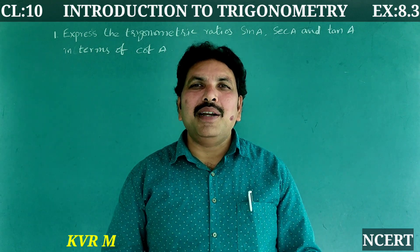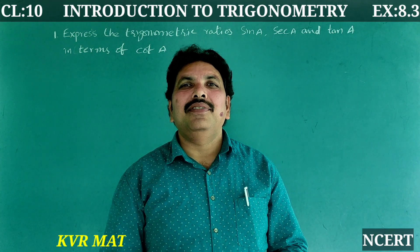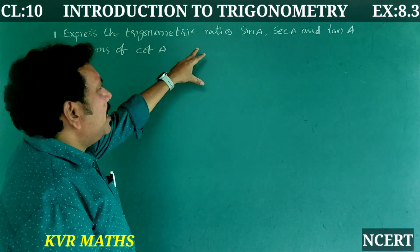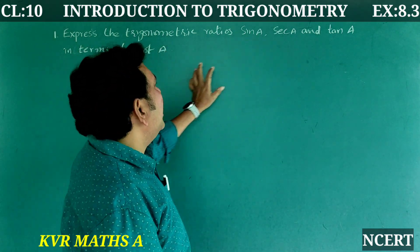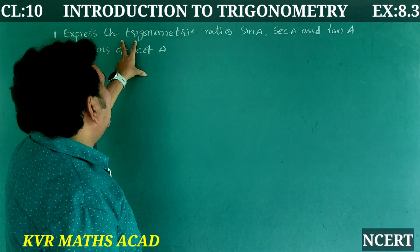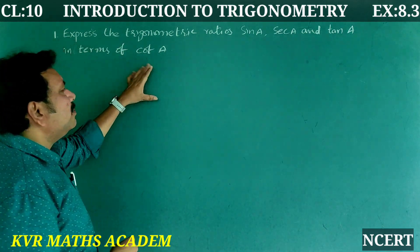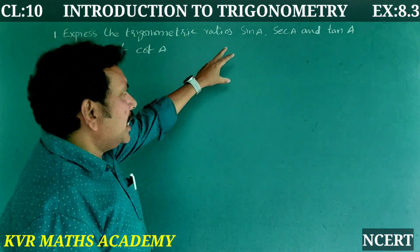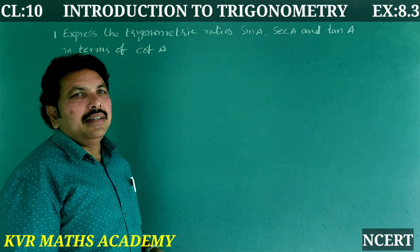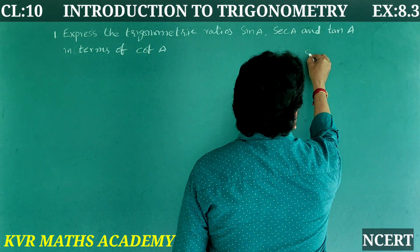First question: express the trigonometric ratios sin A, secant A, and tan A in terms of cot A. So we need to express sin A, secant A, and tan A in terms of cot A. For this, we will use the trigonometric identities.